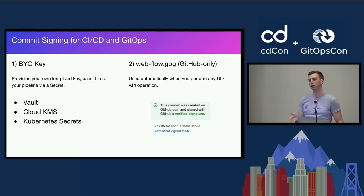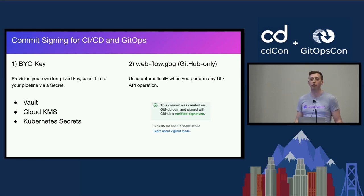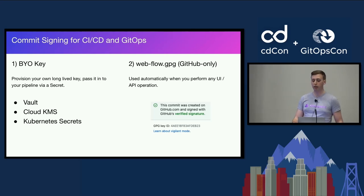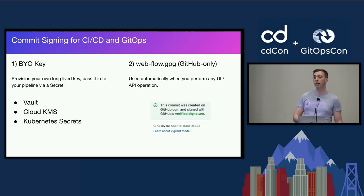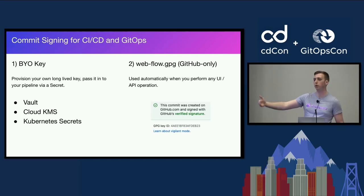There are two approaches I see most commonly for GitOps pipelines. One is bring-your-own-key: you provision a long-lived key, usually in a key management system like Vault or a cloud KMS, and make it available to your CI/CD pipeline. The other, which is GitHub-only, is the Webflow.gpg key. Whenever you do any API or UI operation — like hitting the squash button — GitHub signs your commit with its own key, since it shouldn't have access to your private key.